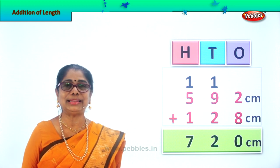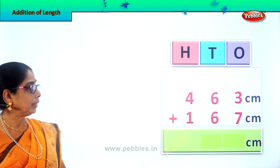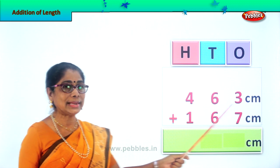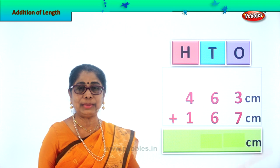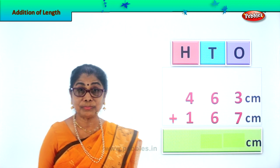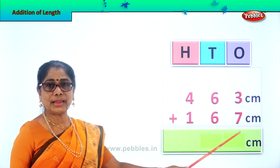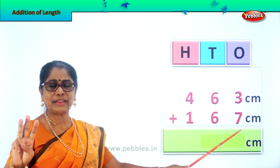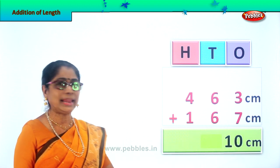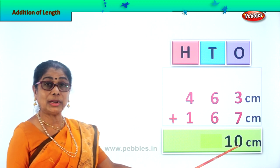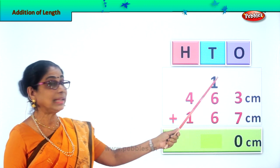Let's look at another sum. We have here 463 centimeters plus 167 centimeters — we are supposed to add them. In the 1's place we have 3 and 7. 7 plus 3 is 10. We leave the 0 in the 1's place, take the 1 ten, carry it and put it in the 10's place.